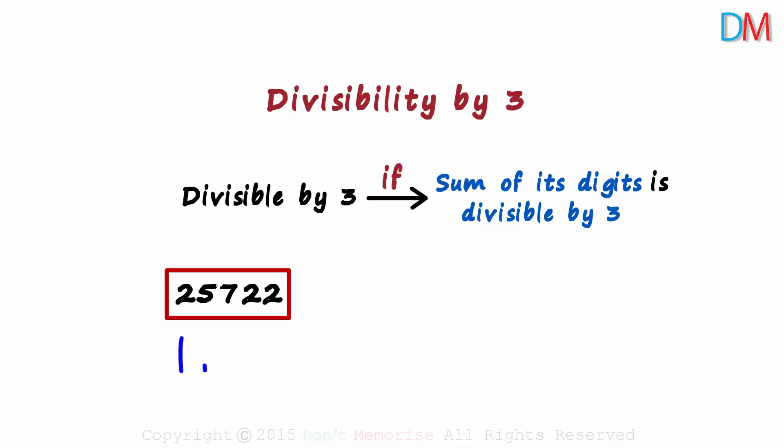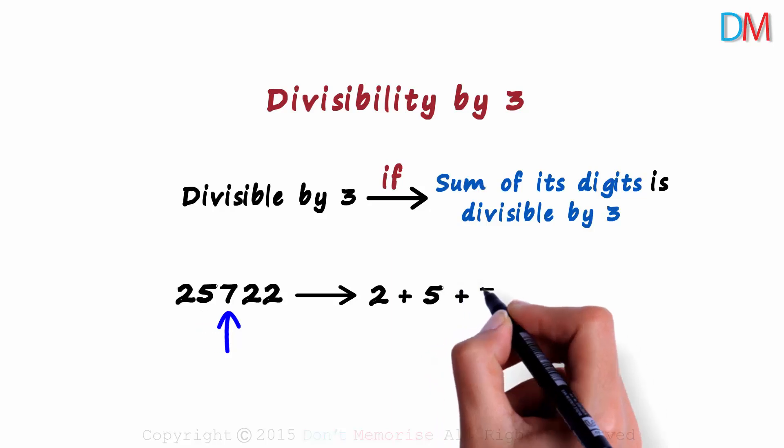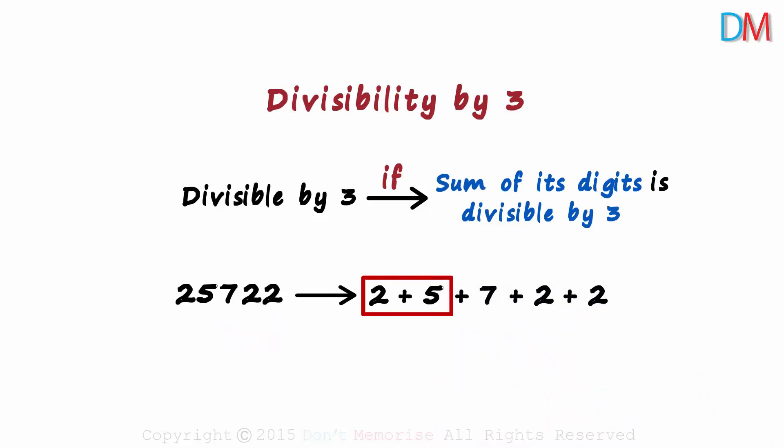This number has 5 digits. Let's add them: 2 plus 5 plus 7 plus 2 plus 2. 2 plus 5 is 7, 7 plus 7 is 14, and 14 plus 4 is 18. So the sum of its digits is 18.